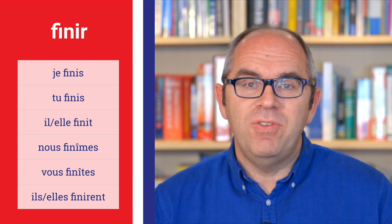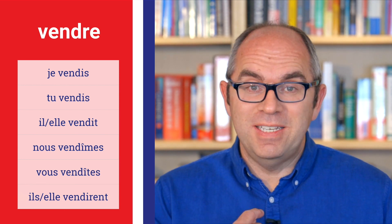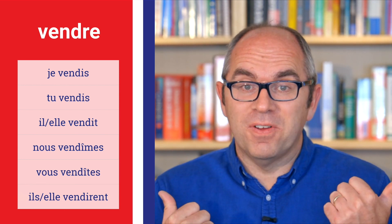And one more verb — an -re verb. We'll take vendre. Vendre in the past historic goes like this: je vendis, tu vendis, il vendit, elle vendit, nous vendîmes, vous vendîtes, ils vendirent, elles vendirent. So that is vendre in the past historic.